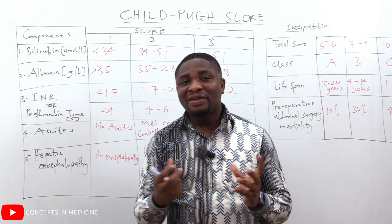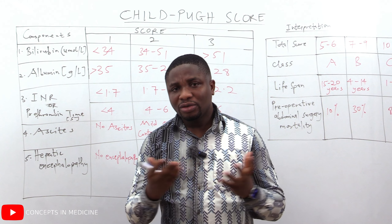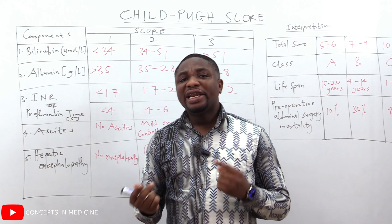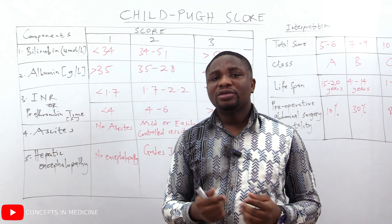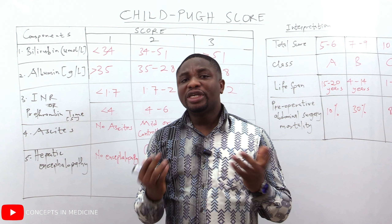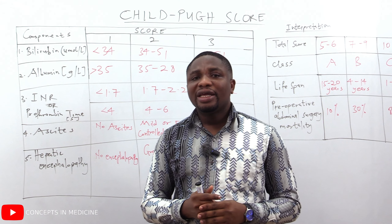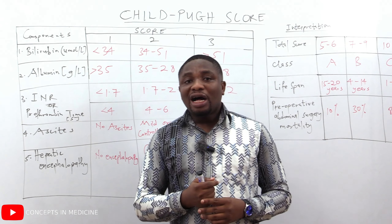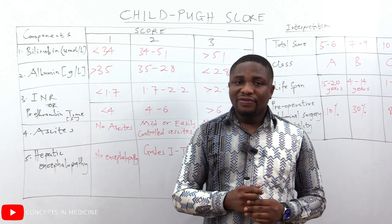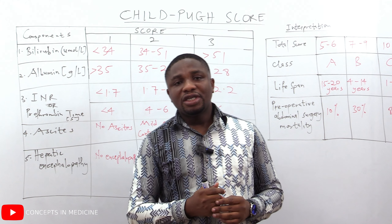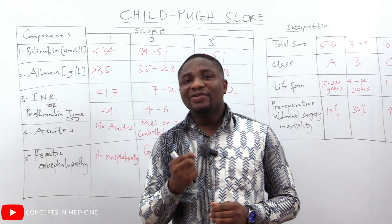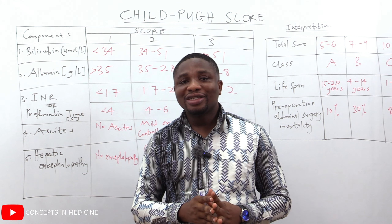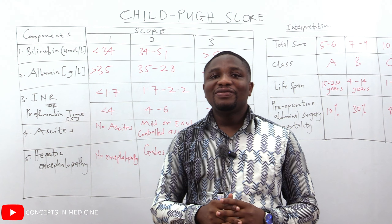This score has five components: serum bilirubin, serum albumin, INR or prothrombin time, ascites (the grade of ascites), and encephalopathy (the grade).